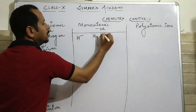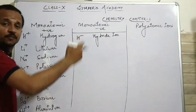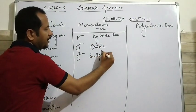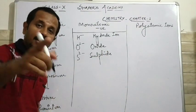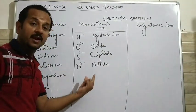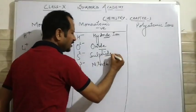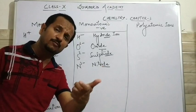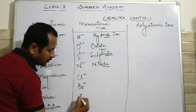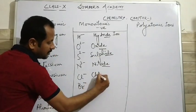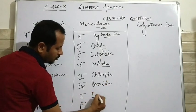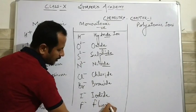Now what about the negative ions? Hydride ion — the negative ion of hydrogen. Secondly, oxide ion. Then sulfide ion — the ion of sulfur. Nitride ion. You can see that all these ions have one similarity: their names are ending with '-ide'. Then chloride, bromide, iodide, and fluoride. So just remember this — names of monoatomic negative ions end with '-ide'.